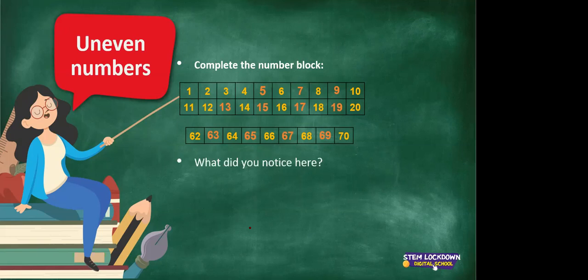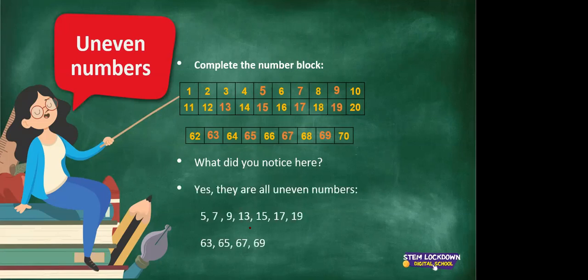Question: what did you notice here? That's right — they are all uneven numbers. Let's name them: 5, 7, 9, 13, 15, 17, 19, 63, 65, 67, 69. What is an uneven number again? Can you remember? Yes — it's when two cannot divide into that number.